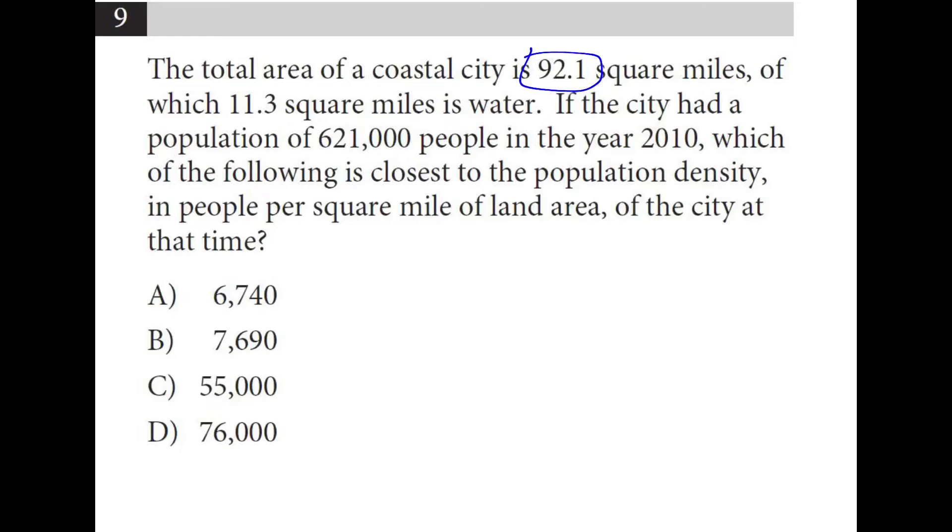Out of 92.1 square miles, 11.3 is water, so we subtract there. We're left with 80.8 square miles. We have 621,000 people. We divide that by the number of square miles, and we find the people per square mile, which is 7,685.